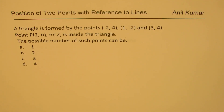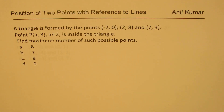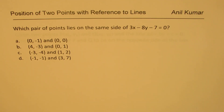Among questions seen in many test papers is this type: a triangle is formed by the points (-2, 4), (1, -2), and (3, 4). Point P = (2, N), where N belongs to integers, is inside the triangle. How many such points are possible? A similar practice question involves a triangle with vertices (-2, 0), (2, 8), and (3, 7). Point P = (A, 3), where A is an integer, is inside the triangle — find the maximum number of such points.